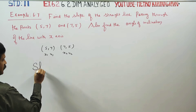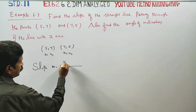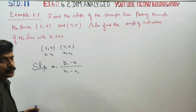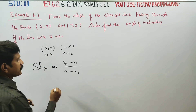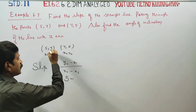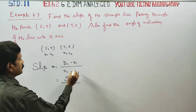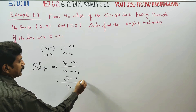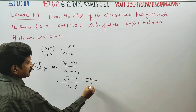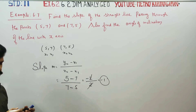The slope formula is m = (y2 - y1) / (x2 - x1). This is called the 2-point formula. Here, y2 is 5, y1 is 7, x2 is 7, x1 is 5. So 5 minus 7 equals minus 2, and 7 minus 5 equals 2. Therefore m = -2/2 = -1. This is the slope.